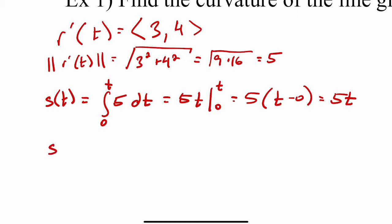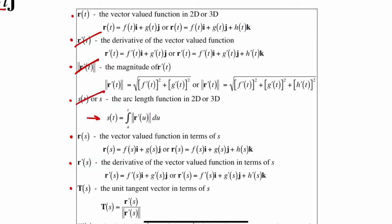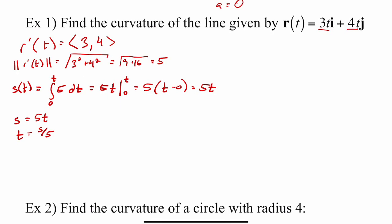So what we can do is just take s and set that equal to 5t. And now we can solve for t. So t would equal to s over 5. Now we have found s(t) or s.